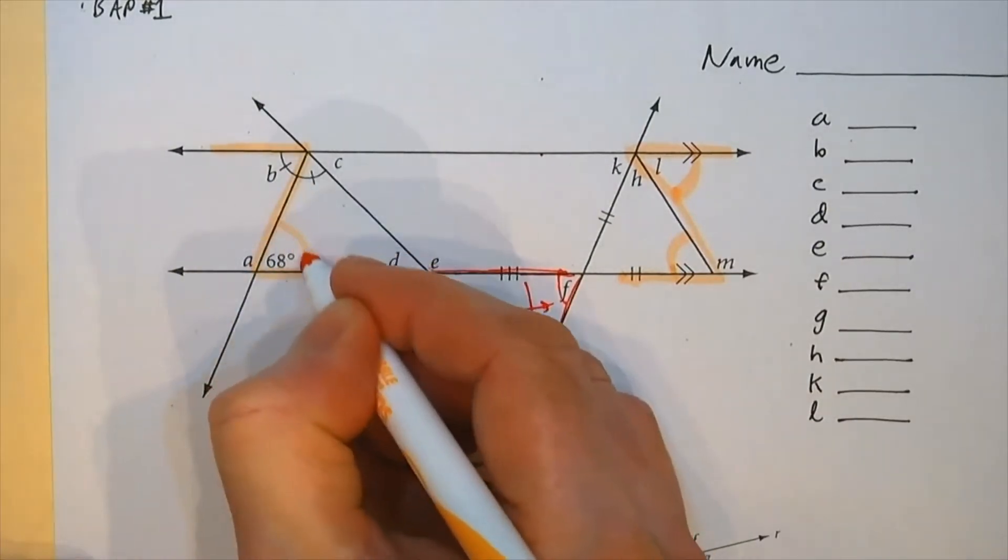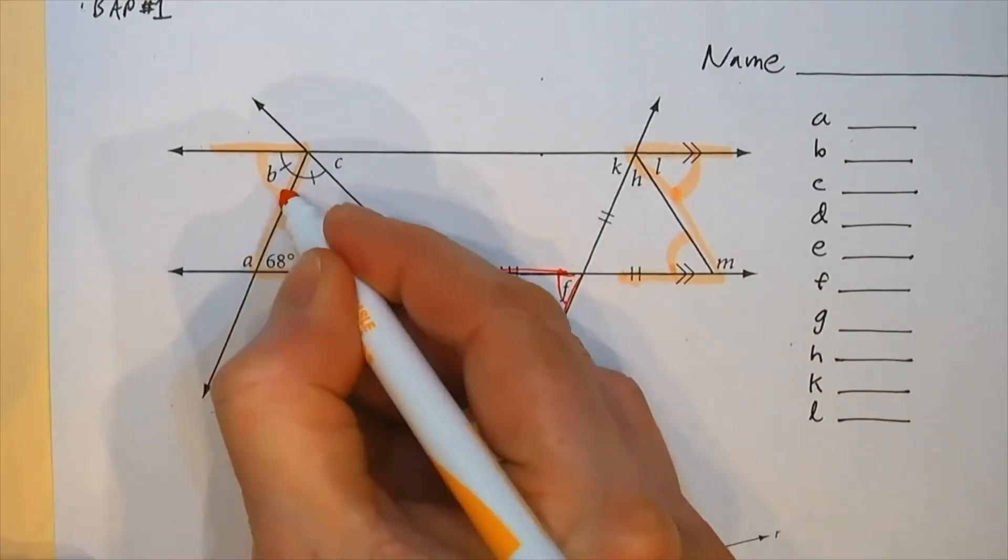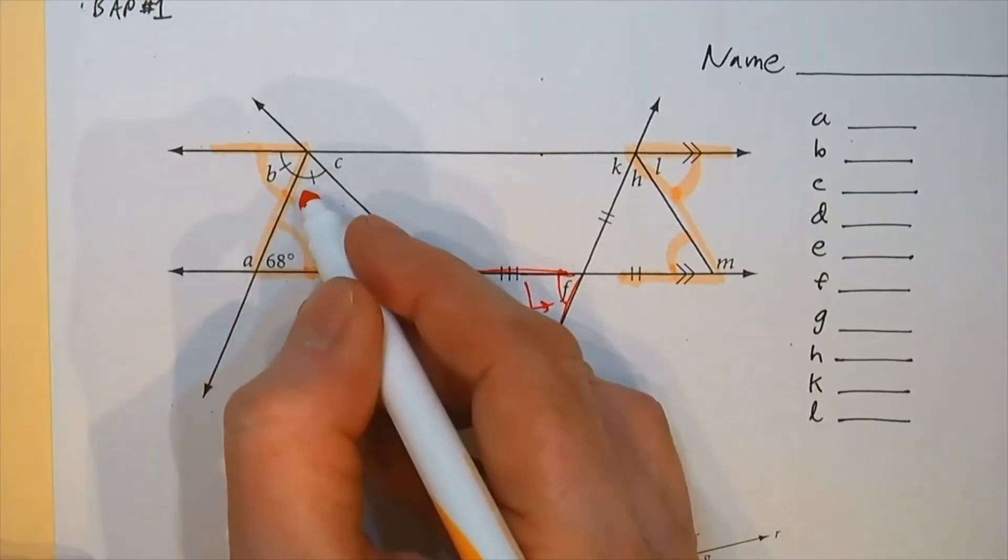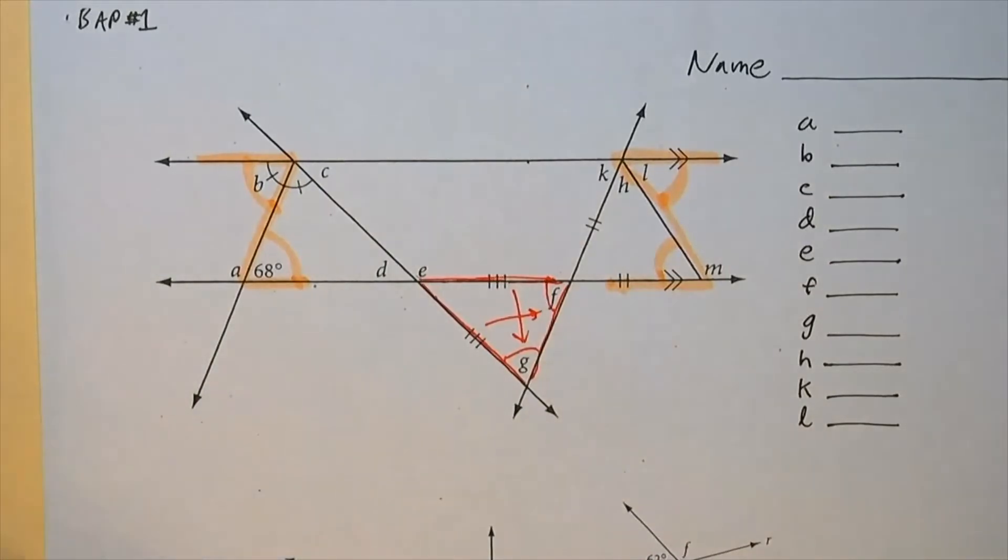Oh, wait a minute. I know this one. I could probably go up here. See, there's the Z, the alternate interior angles. Oh, and these are the same. And then from there, I think I'm onto a roll.